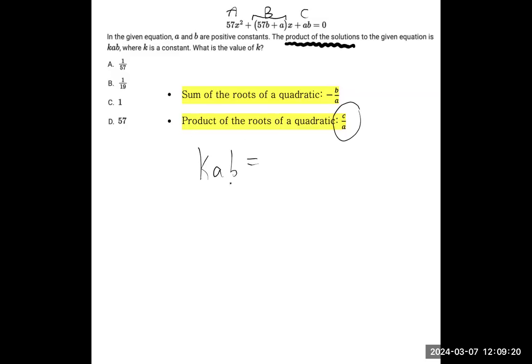So the product of the roots, which is k·a·b according to the question, is also c over a, which is a·b over 57.